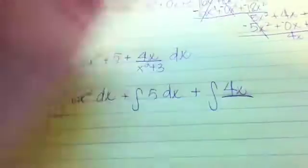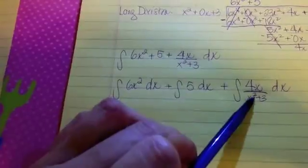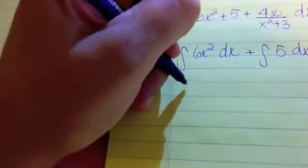And we're going to integrate the 4x over x squared plus 3 with respect to x. And then we'll just have to do a little bit of u substitution, but we'll go ahead and do that.